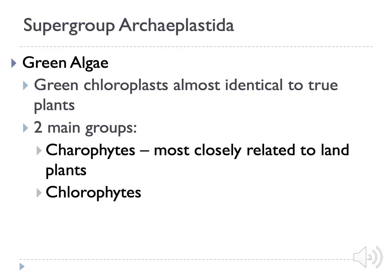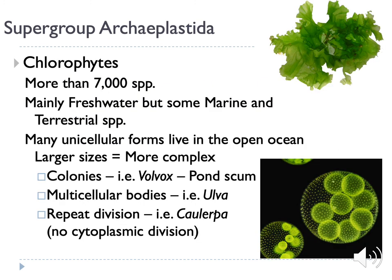Green algae are most similar to our land plants because they contain green chloroplasts. There are two main groups that share ancestry: the charophytes, which is where land plants evolved from, and the chlorophytes, which has most of our green algae. More than 7,000 species of green algae comprise the chlorophytes. They occur in freshwater, marine, and sometimes even terrestrial environments. Some are single-cellular and may occur in colonies; others are multicellular. Floating on top of ponds you may have seen pond scum, and you may have even seen green algae on the side of your fish tank at home.